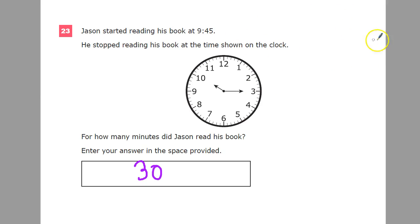If I start at 9:45, and then look at this one, the hour hand is on the 10, and the minute hand is on the 3, so that would be 5, 10, 15. So, I just need to figure out how far apart these two numbers are.